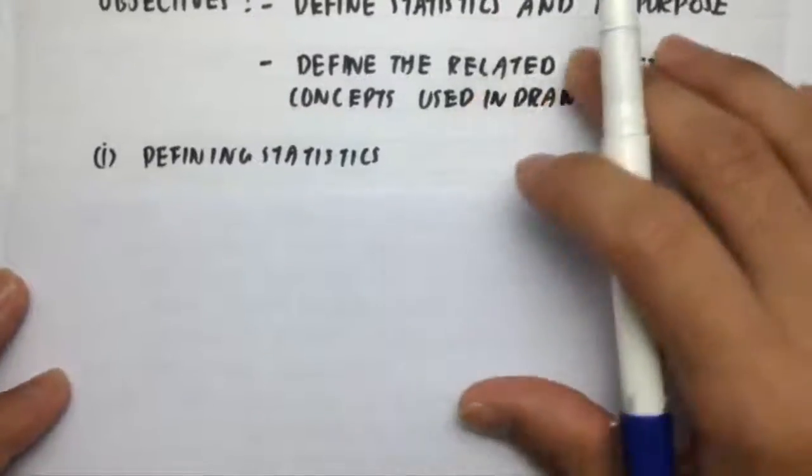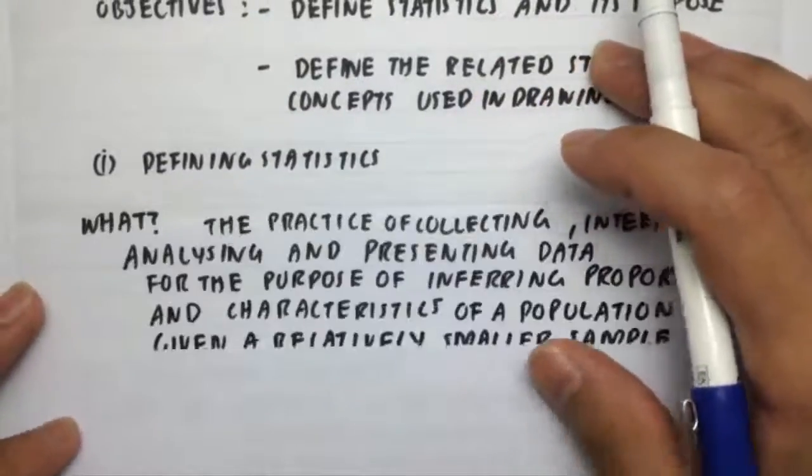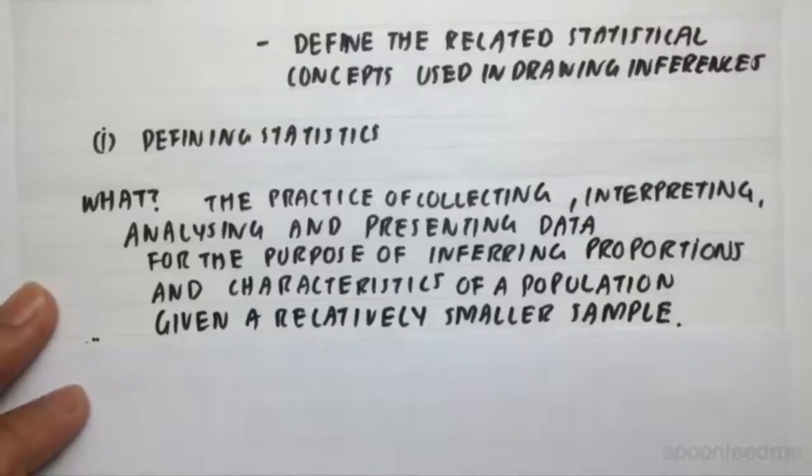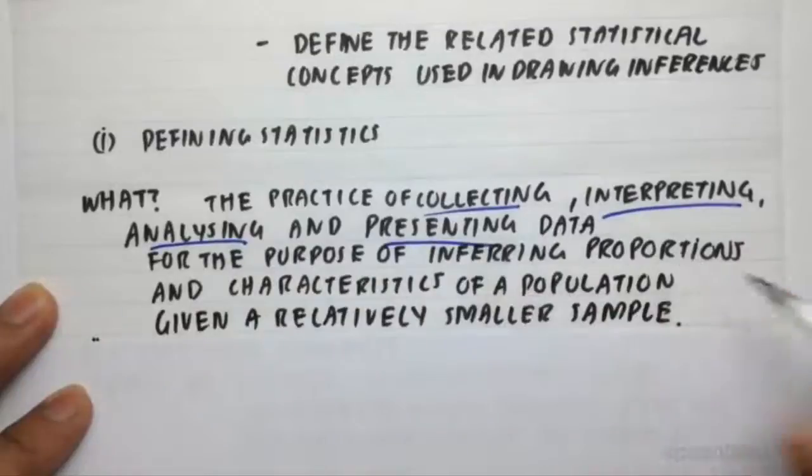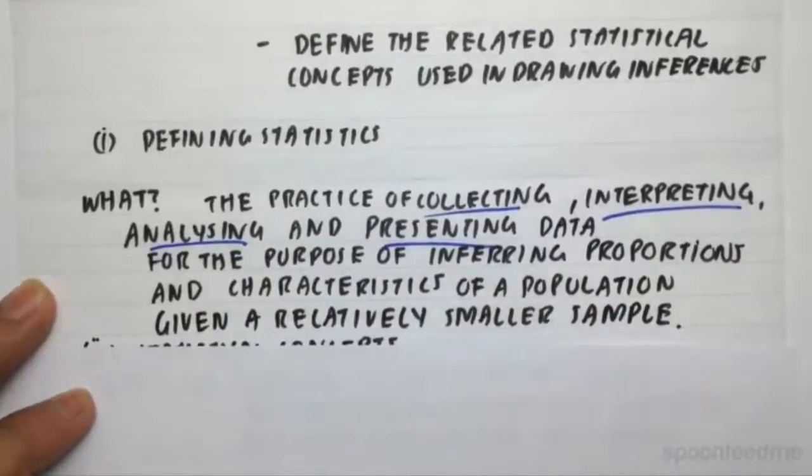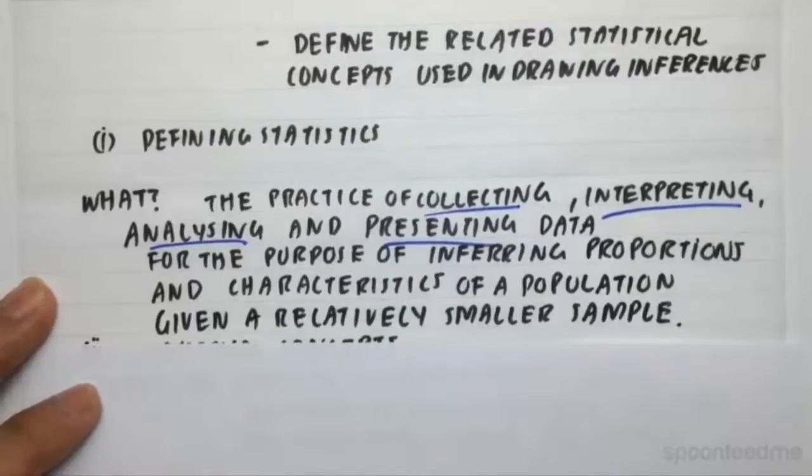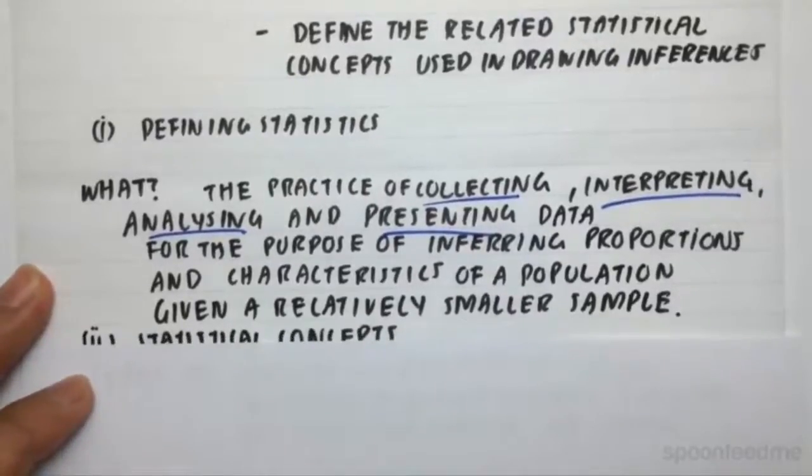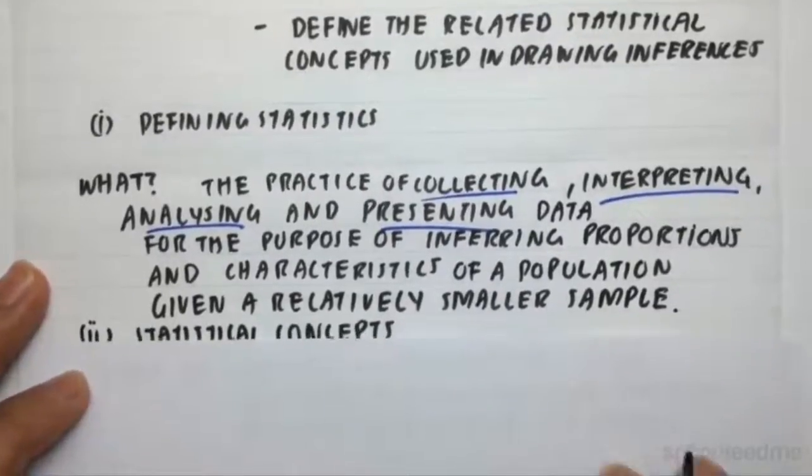So we're going to start with objective number one, defining statistics. So what is it? Well, it's a practice of collecting, interpreting, analyzing, and presenting data for the purpose of inferring proportions and characteristics about a population, given that we're only taking a small sample from that population.